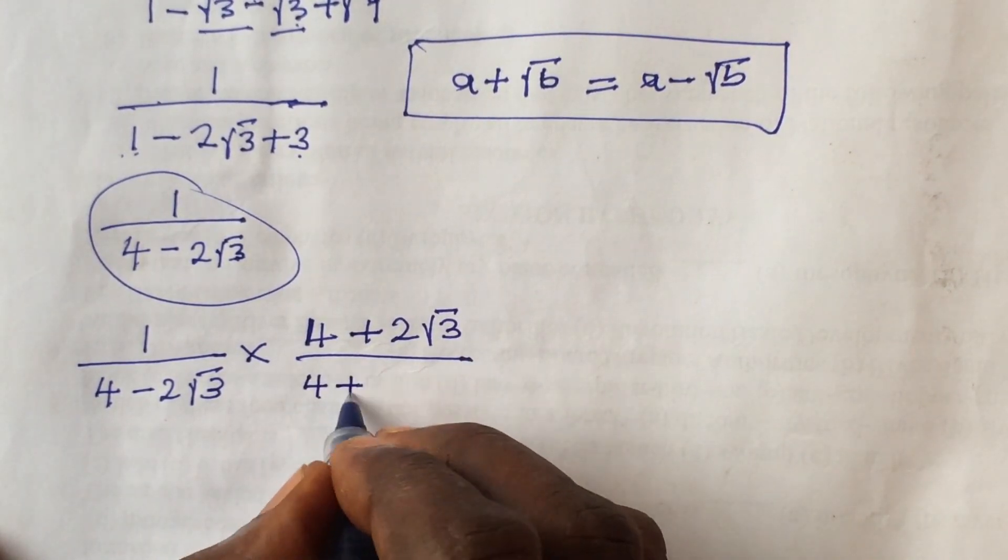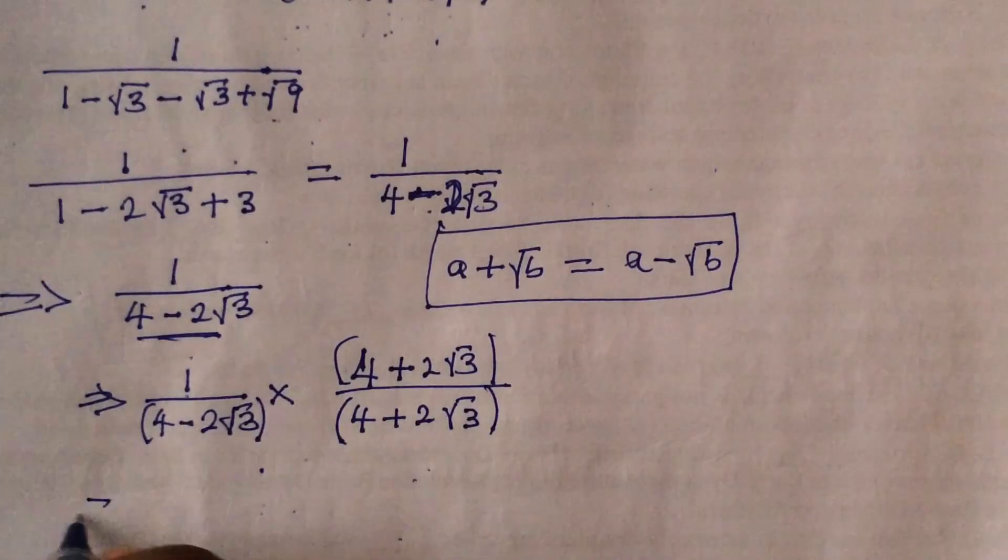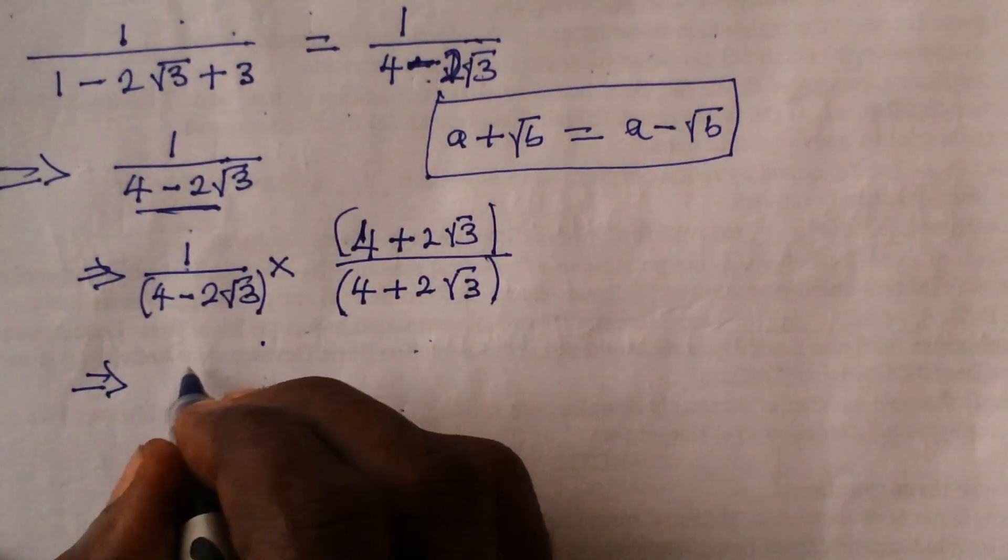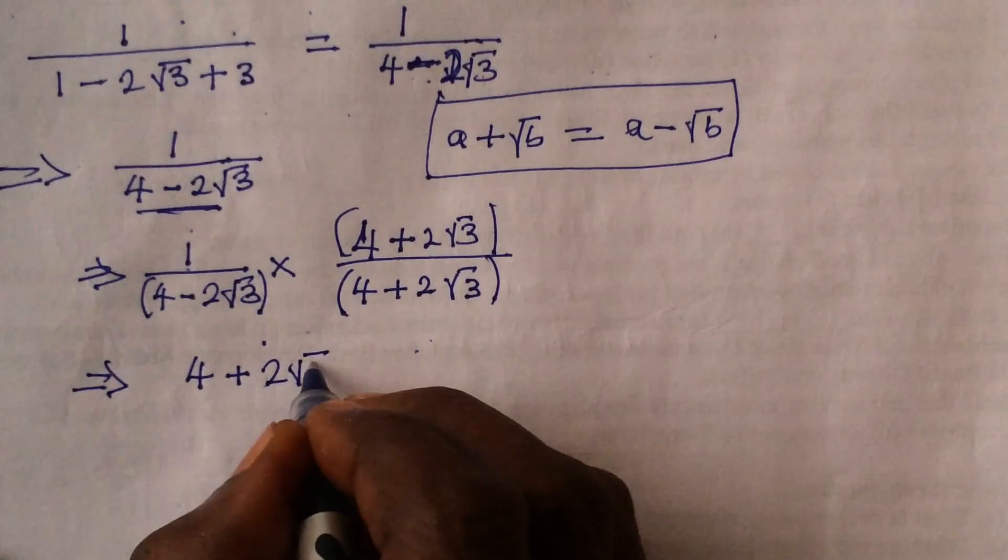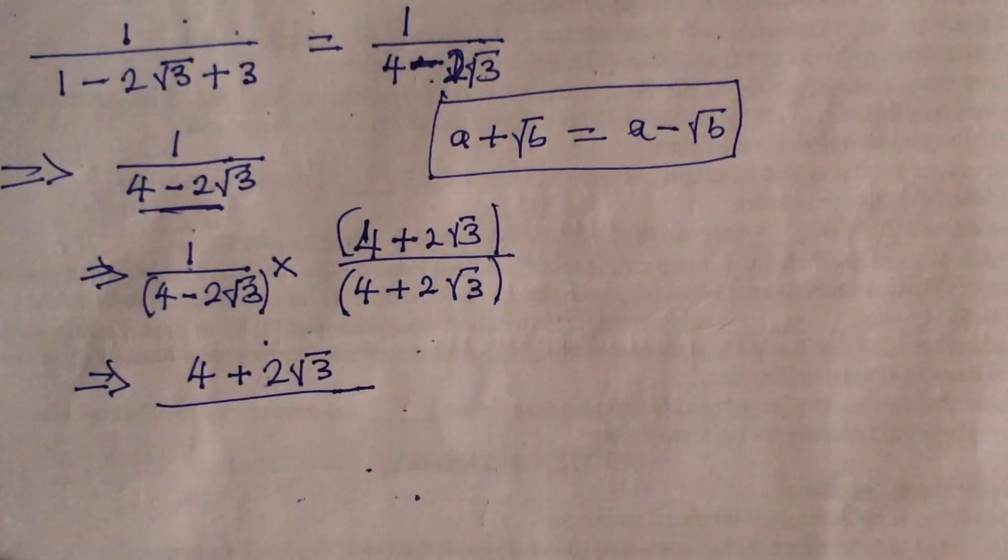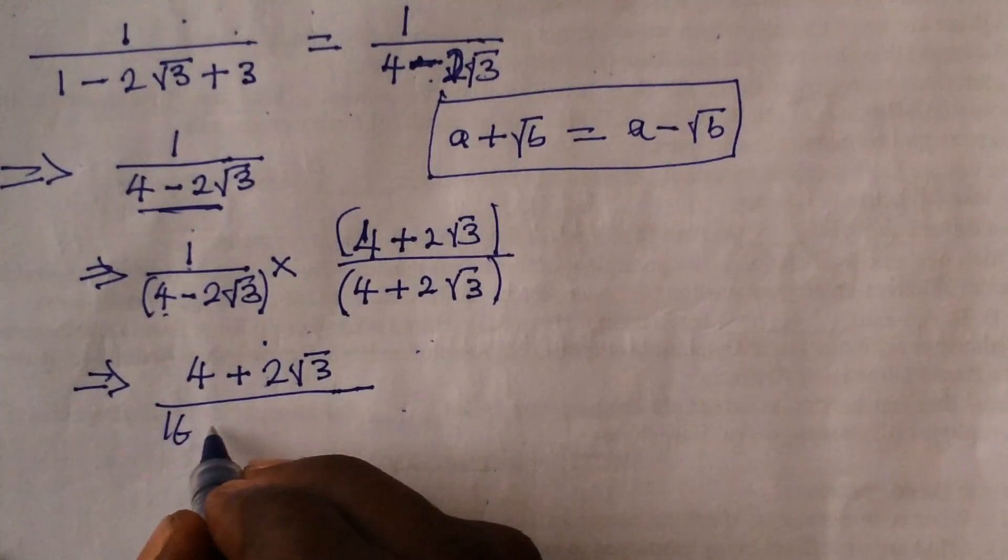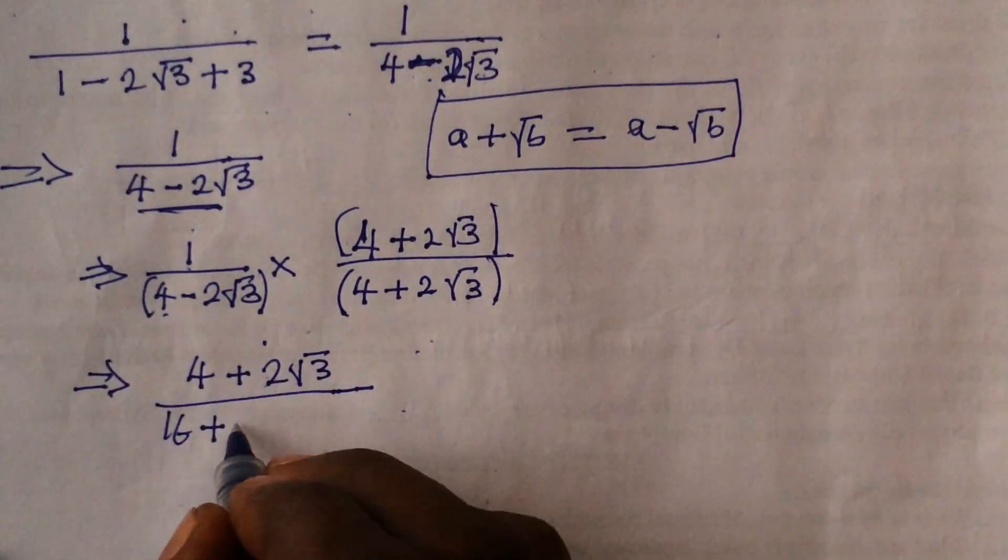If we go ahead and open up, the numerator is going to give us 4 plus 2 root 3. The denominator: 4 times 4 gives us 16.